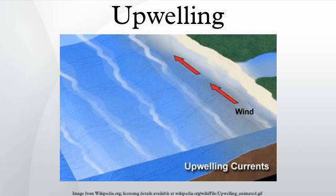The four major eastern boundary currents in which coastal upwelling primarily occurs are the Canary Current, Benguela Current, California Current, and Humboldt Current. The Benguela Current is the eastern boundary of the South Atlantic subtropical gyre and can be divided into a northern and southern subsystem with upwelling occurring in both areas. The subsystems are divided by an area of permanent upwelling off of Lüderitz, which is the strongest upwelling zone in the world.